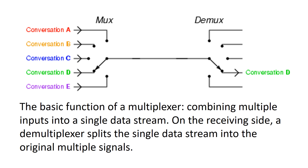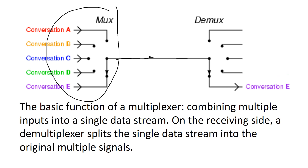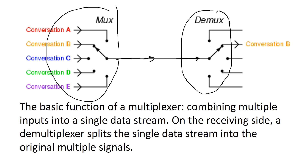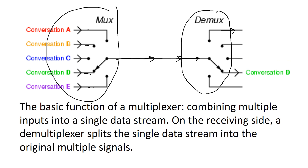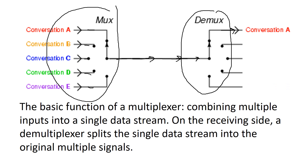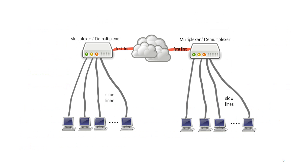As you might have expected, multiplexers and demultiplexers often work together. On the left I have a multiplexer showing multiple inputs combined into one output — this output might be a high-speed fiber optic cable. On the other side, I have a demultiplexer taking that single input and routing it to the correct output. This illustration shows that I have a bunch of conversations all happening at once — between people, computers, or whatever — all getting combined into this single high-speed line, then routed to the correct recipient using multiplexing to combine inputs and demultiplexing to send to the correct output.